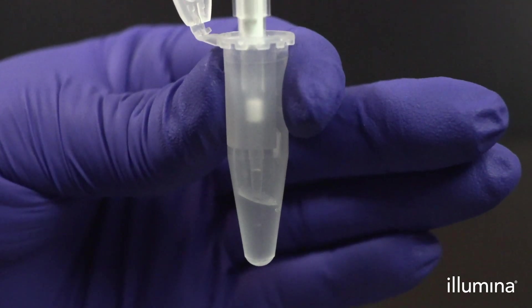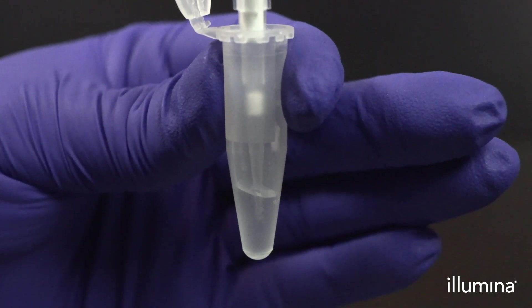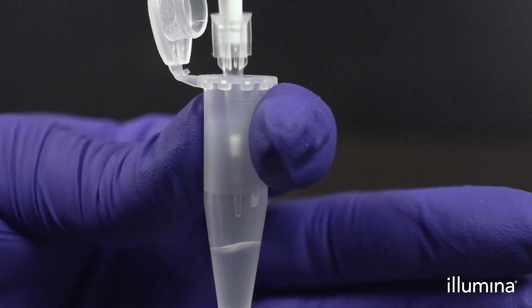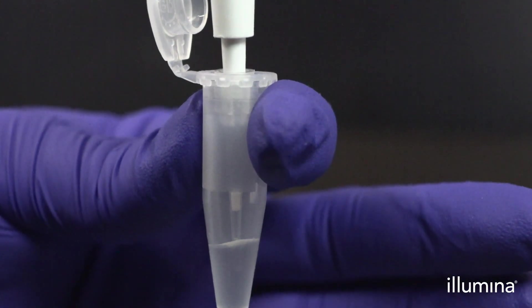Next, add 8 microliters of your freshly mixed sample, plus 40 units of RNase inhibitor directly into the pips, not just on the surface of the pips.